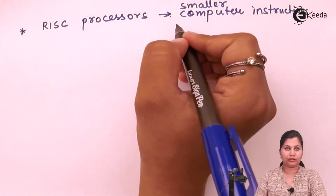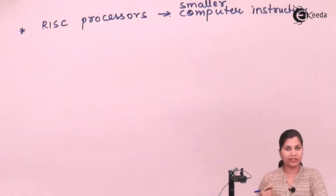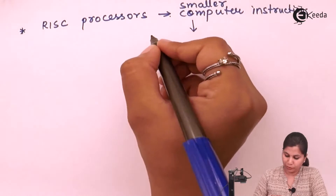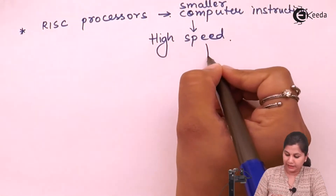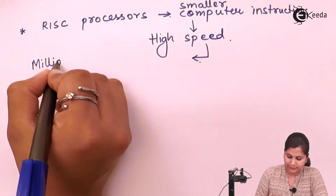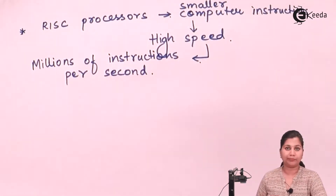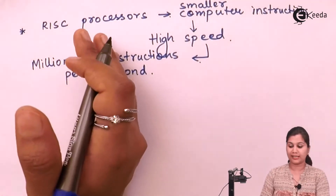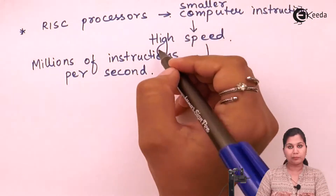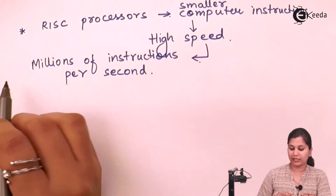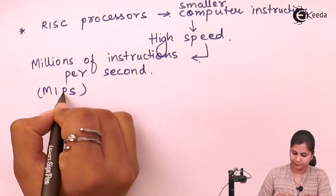Because the instructions are small, they will be executed in very less time. Small computer instructions provide high speed to the processors, and due to this high speed they can perform millions of instructions per second. This is a characteristic of RISC processors — due to smaller instructions, their speed is very high and they can execute millions of instructions per second, which is also called MIPS.